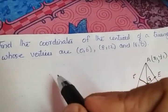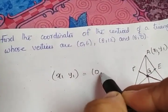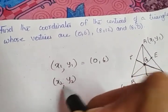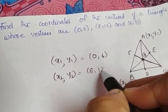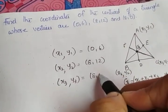So, here, X1, Y1 is given as the first point. Take the first point itself, (0,6). Okay. X2, Y2 is given as (8,12). And X3, Y3 is given as (8,0).